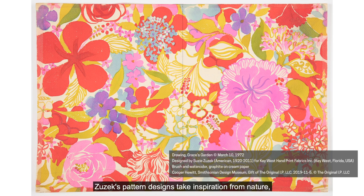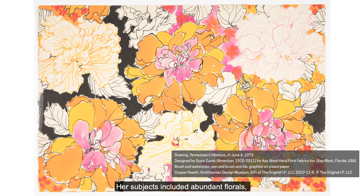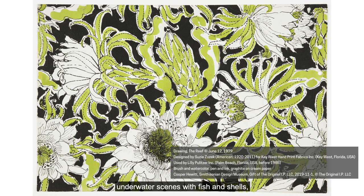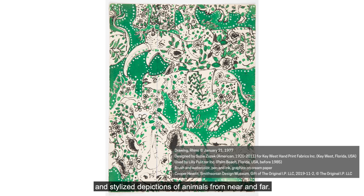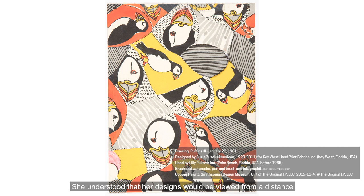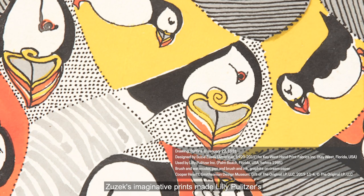Zuzek's pattern designs take inspiration from nature, as well as art and other visual sources. Her subjects included abundant florals, underwater scenes with fish and shells, and stylized depictions of animals from near and far. She understood that her designs would be viewed from a distance as an overall pattern, as well as enjoyed up close, where more details are revealed as you look closer.